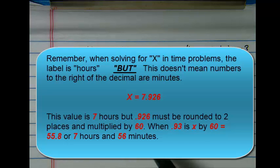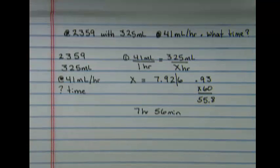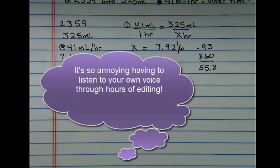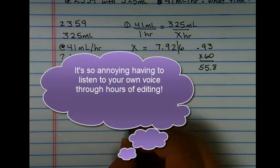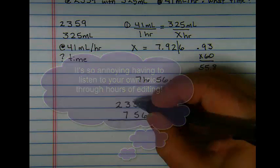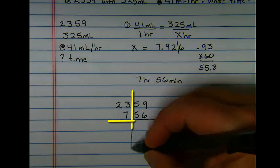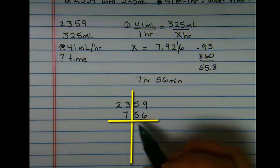Rounded, this would be 7 hours and 56 minutes of flow time. Now the trick comes in combining those times to figure out what time you have for your next bag. So I'm going to start with two lines because I want to separate my hours and minutes so that I don't get these mixed.